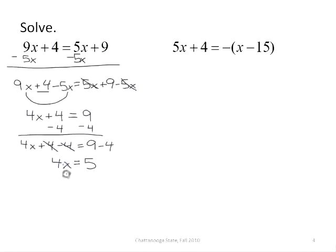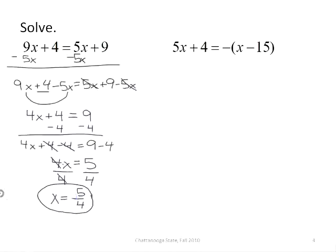Since 4x means 4 times x, I undo the multiplication with division. Divide by the number being multiplied by your x, so 4 over 4 is 1, leaving me with x equals 5 over 4. That is the solution. Remember, if you want to check your solution, you can plug it back into the original equation and make sure the left side equals the right side.